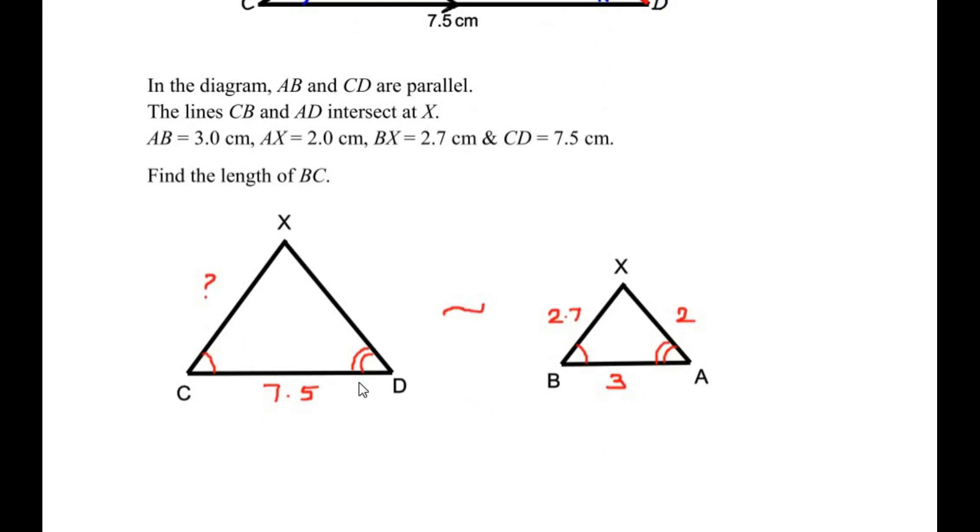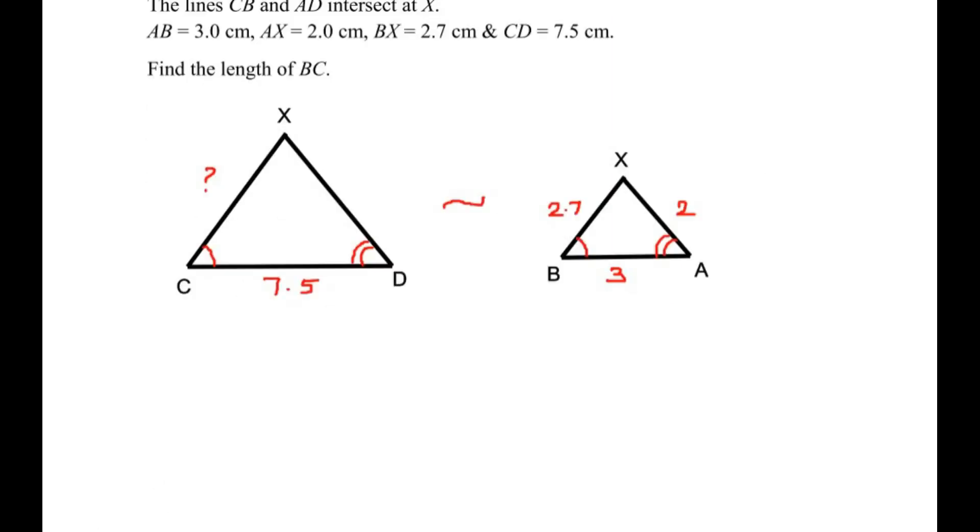Once we have established that the two triangles are similar, their corresponding sides will be in the same proportion. So we write: CX over its corresponding side BX is equal to CD over AB.